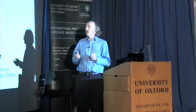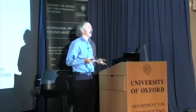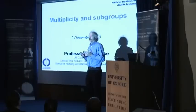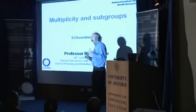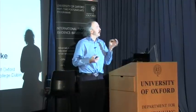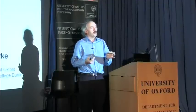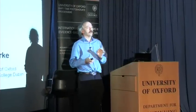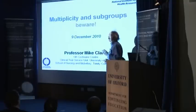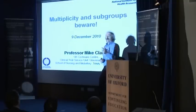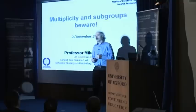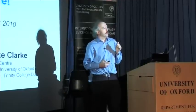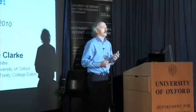What I'm going to talk to you about this evening is multiplicity and subgroups. It's a talk we use inside a course teaching people about how to do a randomised trial. This particular element is about things to be really careful about when you're doing a randomised trial or when you're using somebody else's randomised trial. You should leave with a sense of what not to do as a trialist, what to be careful about when you read somebody else's trial, and what to be careful about when you use somebody else's trial in a systematic review.